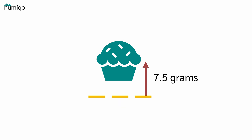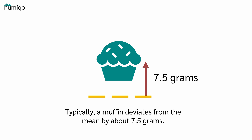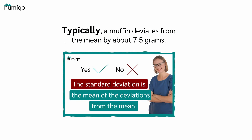In our case, the standard deviation is about 7.5 grams. So typically, a muffin deviates from the mean by about 7.5 grams. If you want to know what 'typically' means, just have a look at my video: 'Is the standard deviation the mean of the deviations from the mean?'